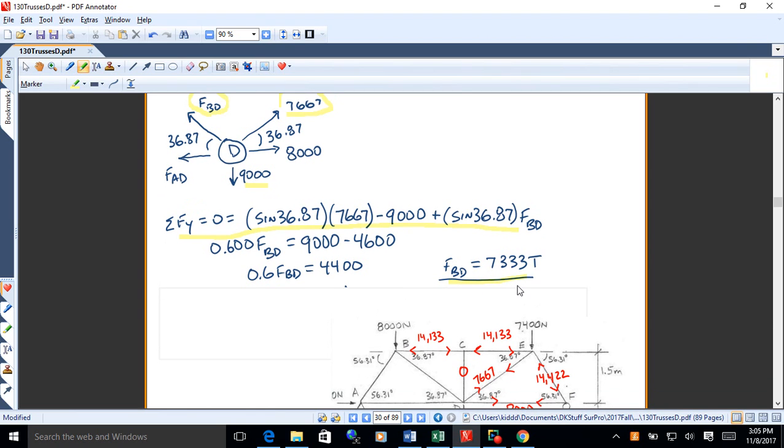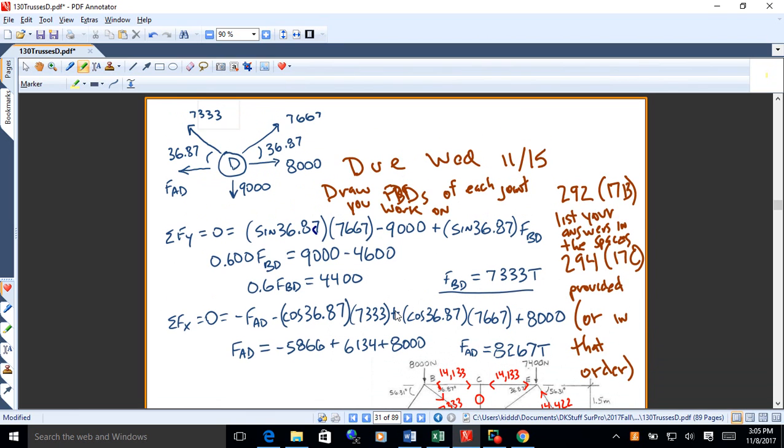Okay, once you've got FBD, then you can go sum of FX and set that equal to 0. And there you go.